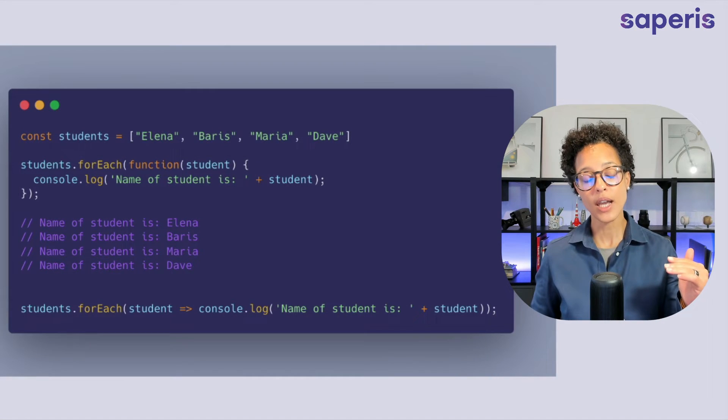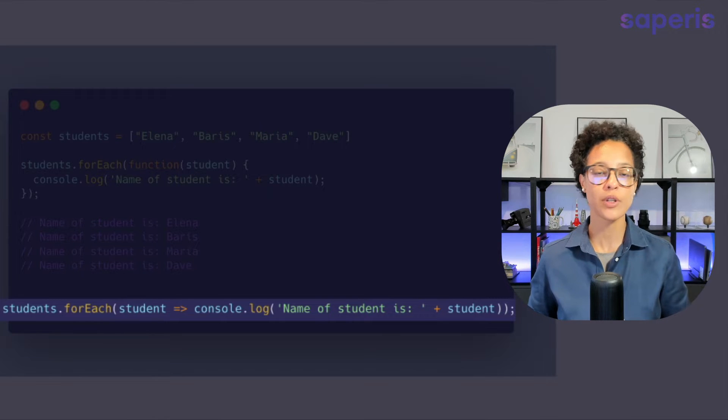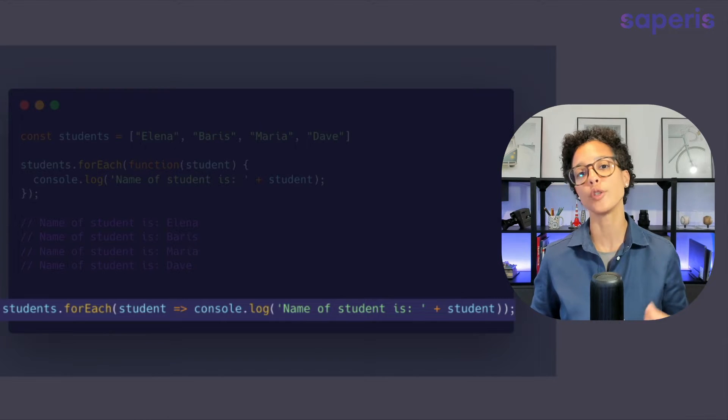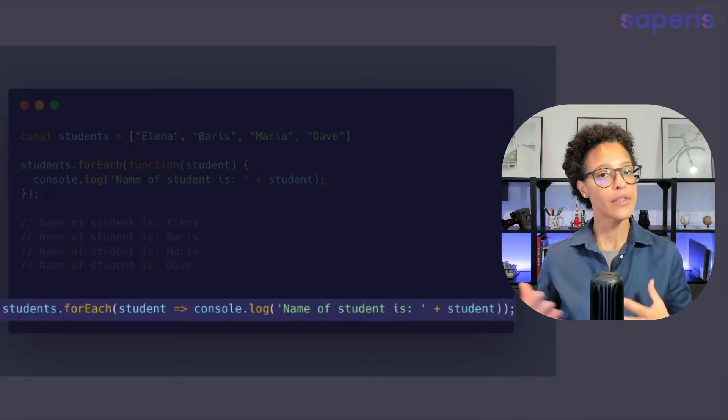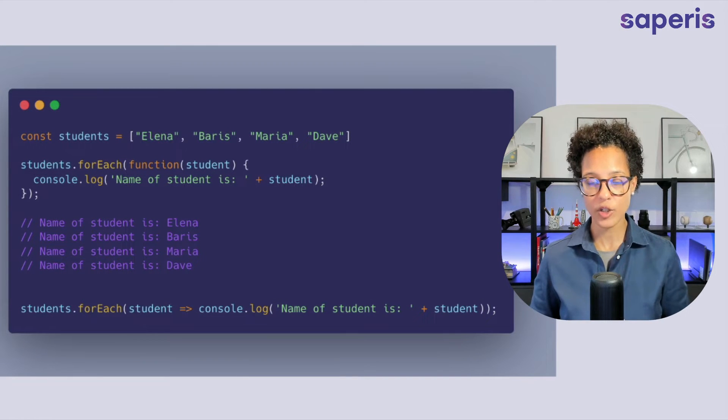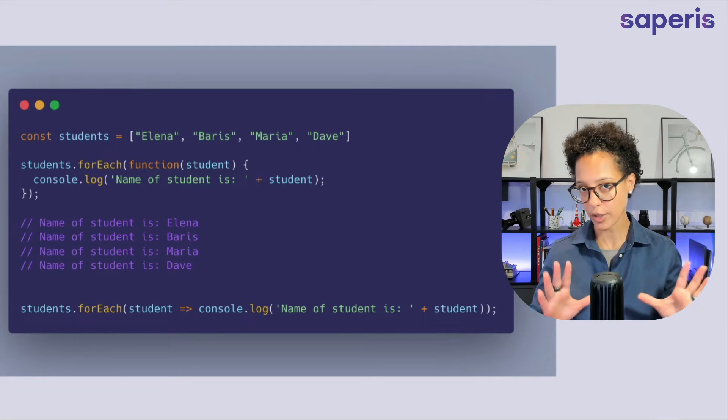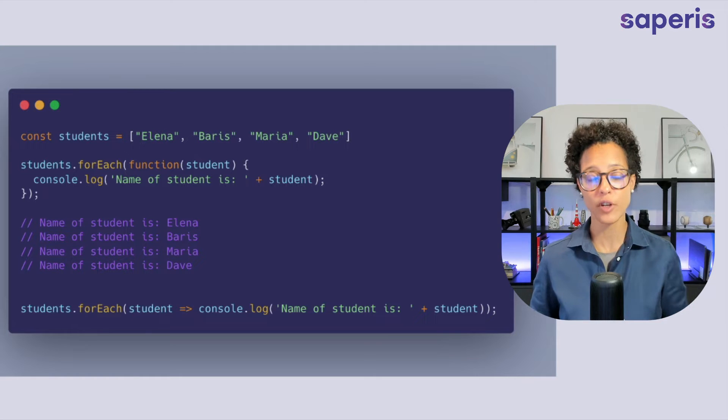Now the last line is to show you how you can use the forEach method when you're using arrow functions. This is a newer way of writing functions. I still tend to use the traditional way so that is the upper forEach statement but just so that you see how to use the arrow function I've added it to this screenshot as well.